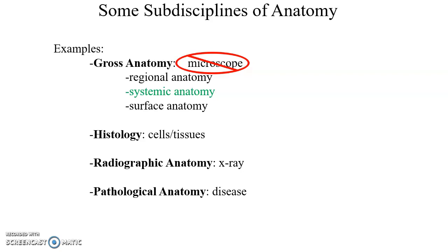Surface anatomy refers to the structures you can see, feel, touch, probe, or listen to — basically the things a general physician looks at during a physical exam. Histology is the study of cells and tissues, using a microscope to see down to the cellular level structures in the human body.